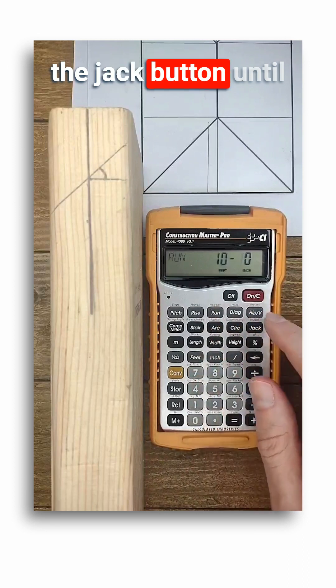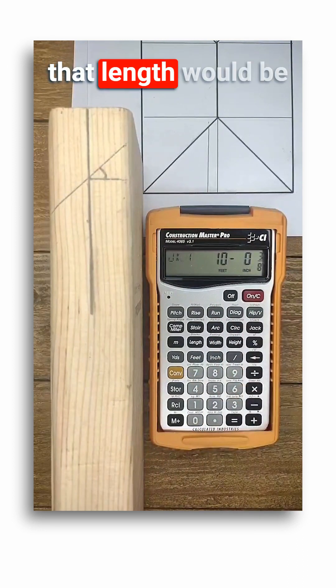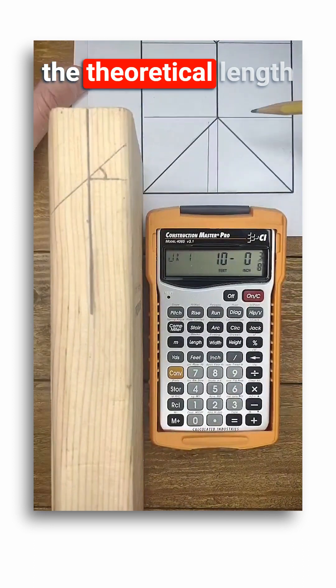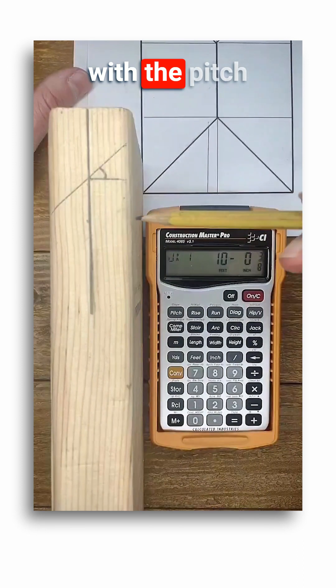Now I'll push the jack button until JK1 displays. That length would be the theoretical length of my first jack rafter as it sits in plane with the pitch of my roof.